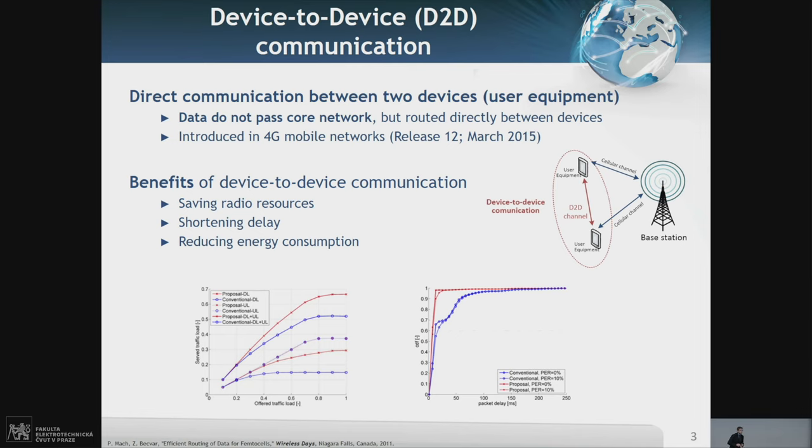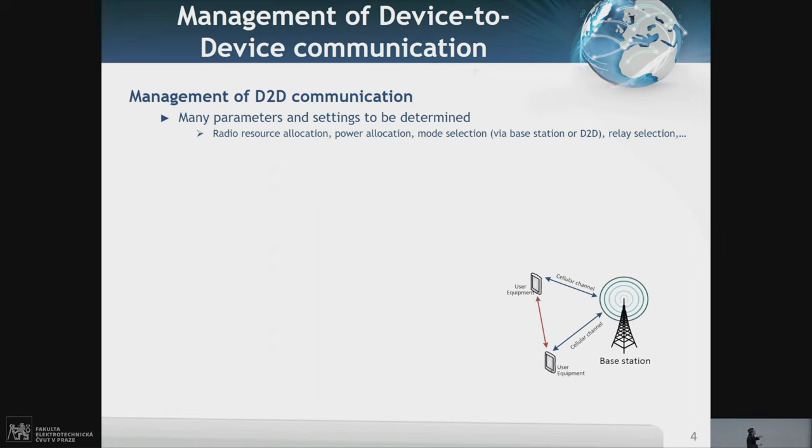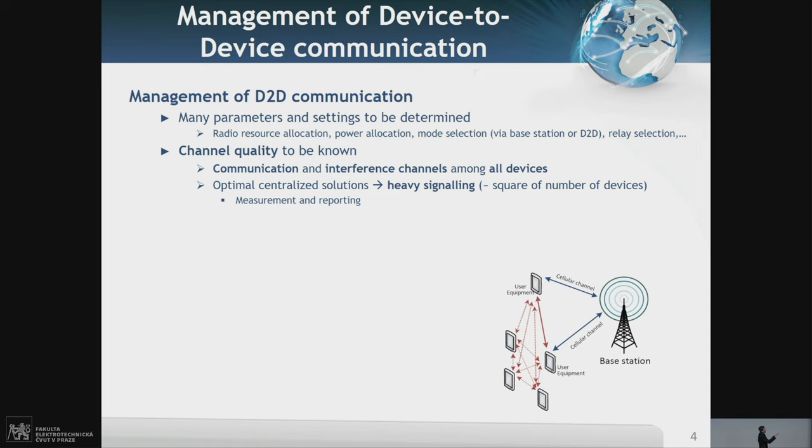Device-to-device communication also complicates management of communication resources because we need to think about which channel, what time users should communicate, transmitting power to avoid interference, and whether direct communication is beneficial or we should follow traditional way. We can even relay communication through multiple hops. To manage all these aspects well, we should know channel quality, not only between two devices but also channels to base station and all channels to other devices in the area because of potential interference.